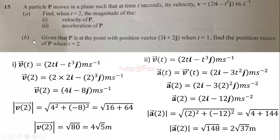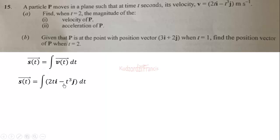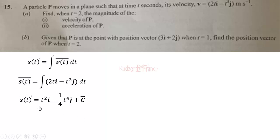Now for part (b): given that P is at the point with position vector 3i plus 2j at t equals 1, we find the position vector at t equals 2. The position vector is the integral of the velocity vector. Integrating, we get t-squared i minus one-quarter t to the power 4 j, plus a constant vector C.